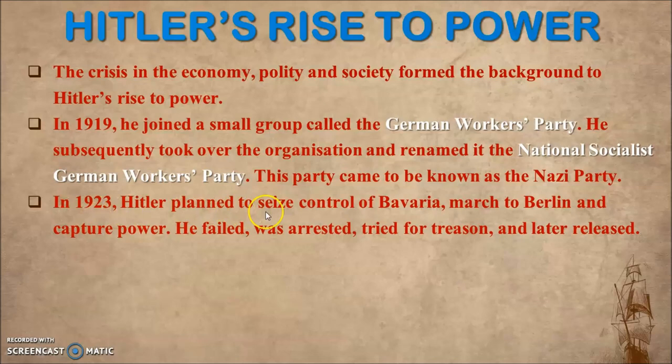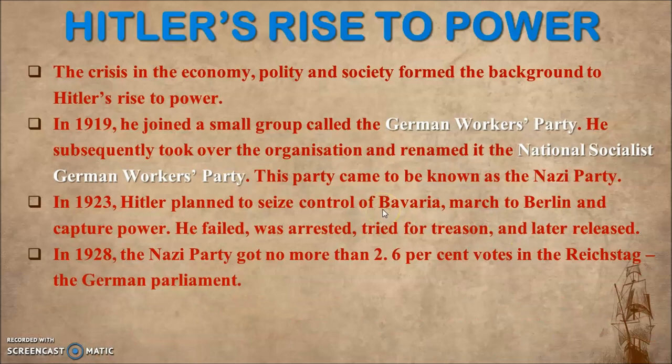In 1923, Hitler planned to seize control of Bavaria — a state in Germany — and march to Berlin to capture power, but he failed. He was arrested and tried for treason and later released. In the 1928 elections, the Nazi Party got no more than 2.6 percent of votes in the Reichstag, which was the German Parliament.